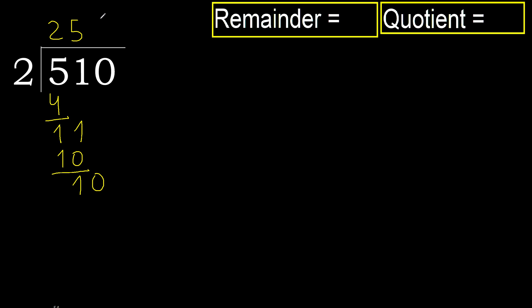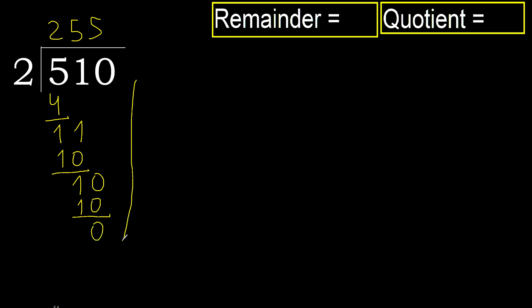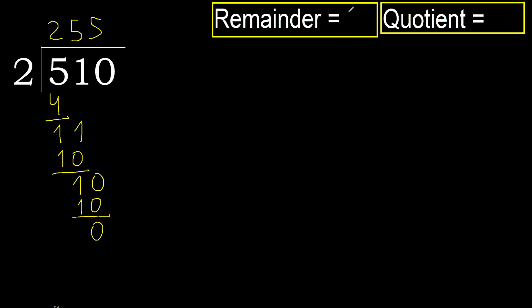2 multiplied by 5 is 10 — 10 is not greater. Subtract: 0. Next, there is no more number, therefore finish. 0.